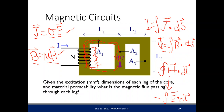If we let this be a closed loop and it equals zero, that is your Kirchhoff's law. But in our magnetic circuit, this is not zero, so we need to be careful when doing Kirchhoff's law in magnetic circuits. One loop is enough.